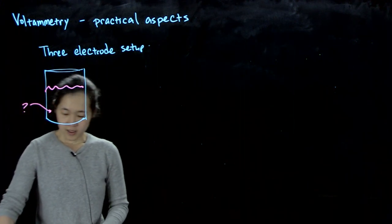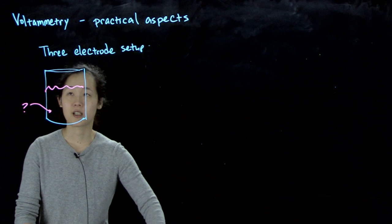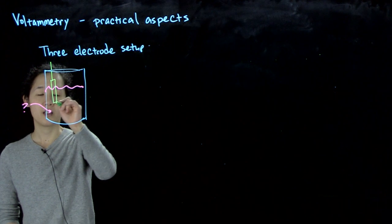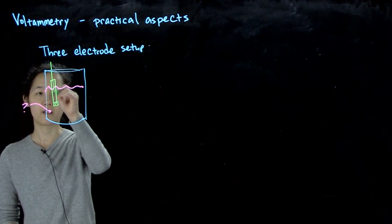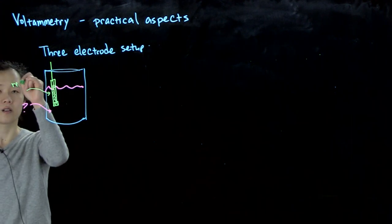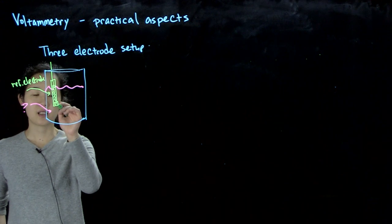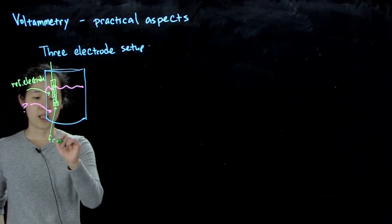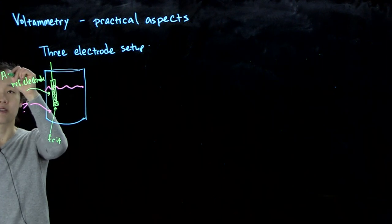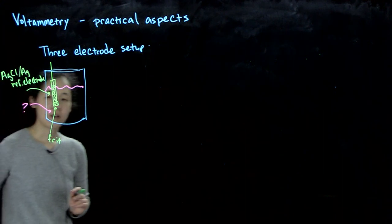We can do a similar reference electrode to what we've previously done. Over here, I'm going to have, let's say, silver-silver chloride, for example. So this would be the reference electrode. This is the frit that communicates with the cell, or a porous membrane, and then here's my internal solution.